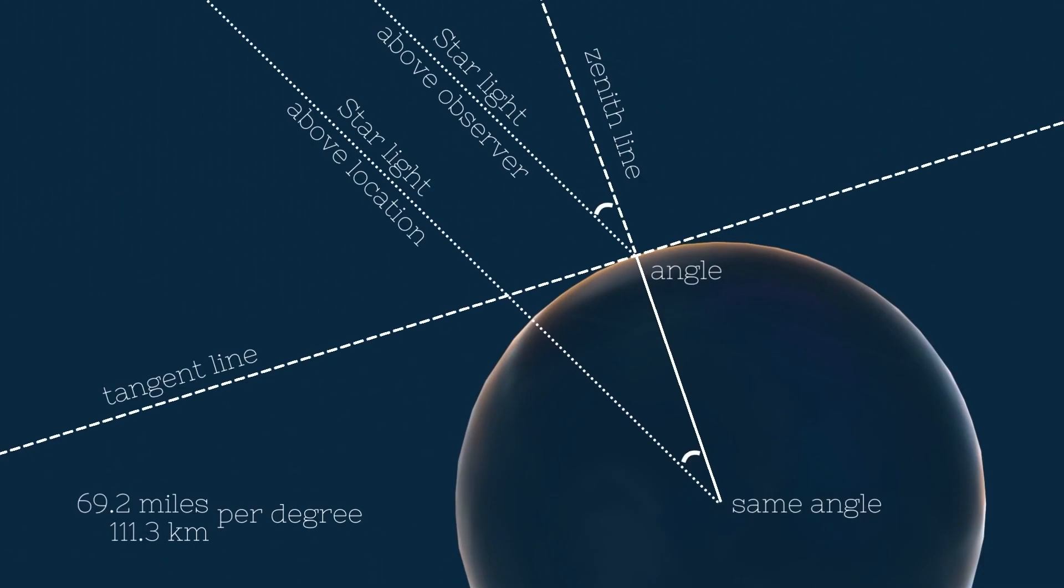We use very simple trigonometry, that tells us that if a star is x degrees down from being straight up, then the star would be straight under the location x degrees away on the globe. So we get that one degree on the globe earth is approximately 69 miles or 111 kilometers.